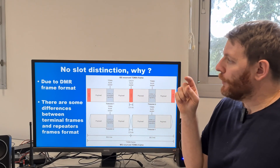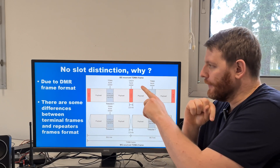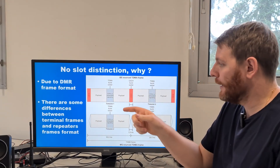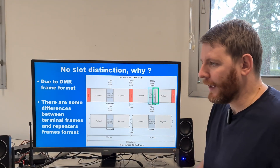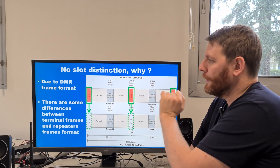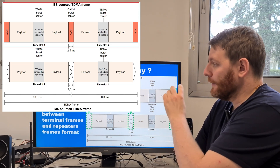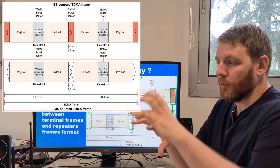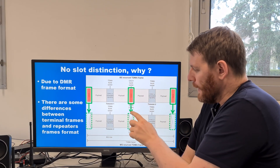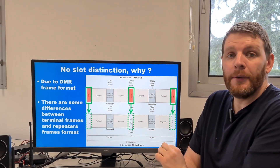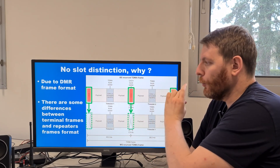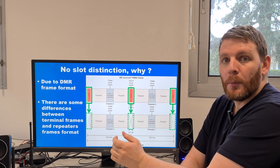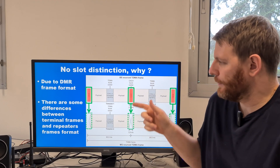This phenomenon is due to the DMR frame format. There is a difference when a repeater is sending frames and when a terminal — mobile or handheld — is talking. The frames are slightly different. Here is a BS-sourced TDMA frame, sent by a base station repeater. And here, an MS-sourced TDMA frame from a mobile station. As you can see, a part is missing: the CACH part — the command and suspension channel — is missing. In repeater mode, the repeater continuously transmits frames with CACH, but mobile and handheld terminals never transmit CACH.